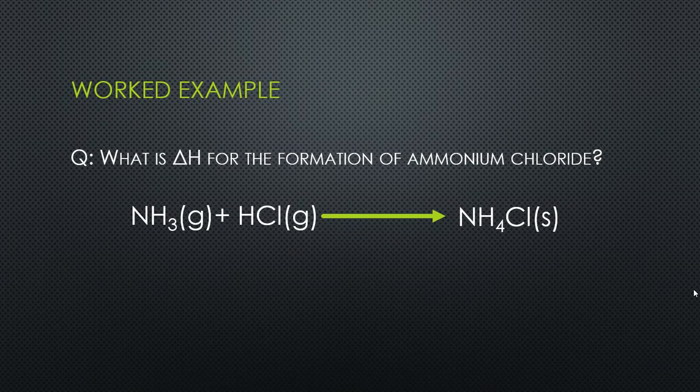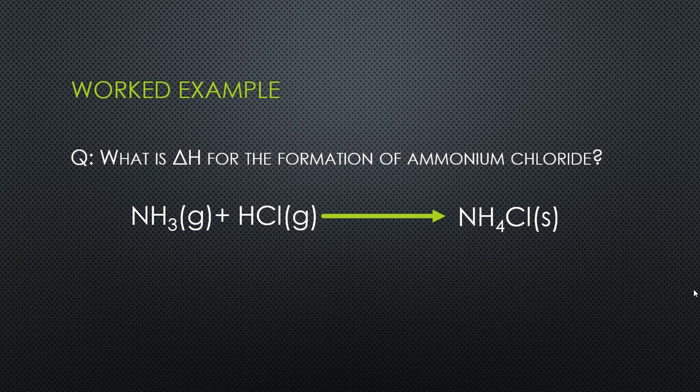Here's our worked example. We're going to look at the enthalpy change for the formation of ammonium chloride. There is our reaction, and you've got to pay attention to the state symbols as well. Make sure you've got a balanced equation and that you have the state symbols because that affects how you do the calculation.